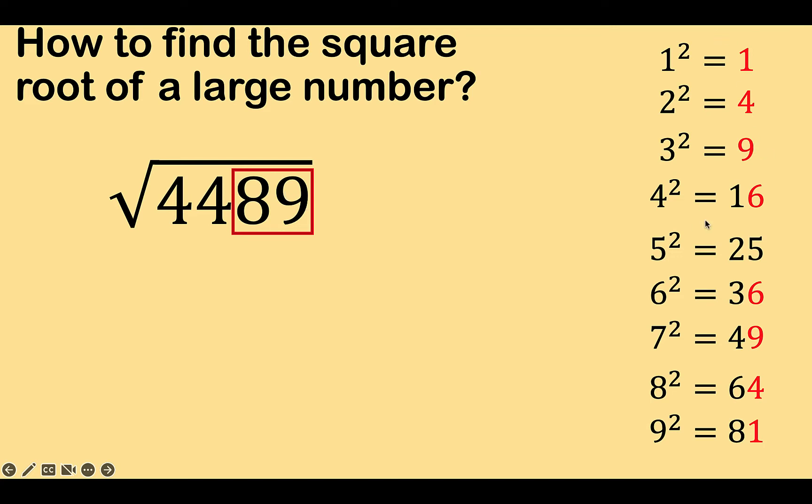And in our table here, it is 3 squared and 7 squared with 9 as the last digits. So therefore, we have two possible choices here, 3 and 7, because 3 squared is 9 and 7 squared is 49. And we have this 9 here.